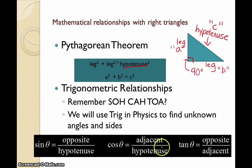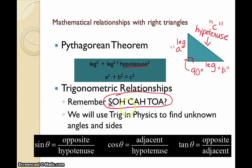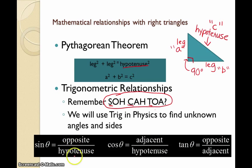Trigonometry is a way for us to deal with the ratios between the angles of a triangle and specific sides of that triangle. Hopefully you remember SOH-CAH-TOA from your math classes. The S, C, and T stand for the trigonometric functions, and the next two letters tell us which sides are being compared. So the sine of any angle is equal to opposite over hypotenuse — that's where we get the SOH from.